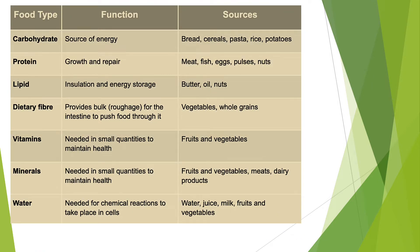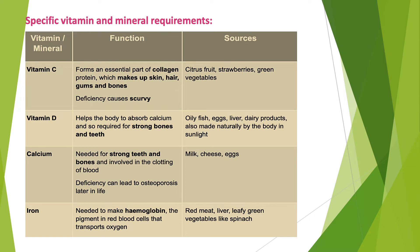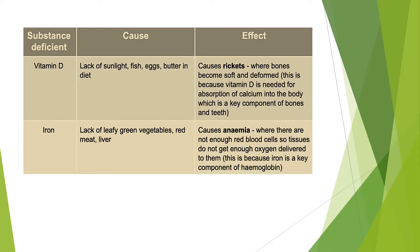The table displays the function and the sources of the different food types. The following table tells us about the cause and effect. For example, iron deficiency causes anemia where there are not enough red blood cells, so tissues do not get enough oxygen delivered to them. This is because iron is a key component of hemoglobin.